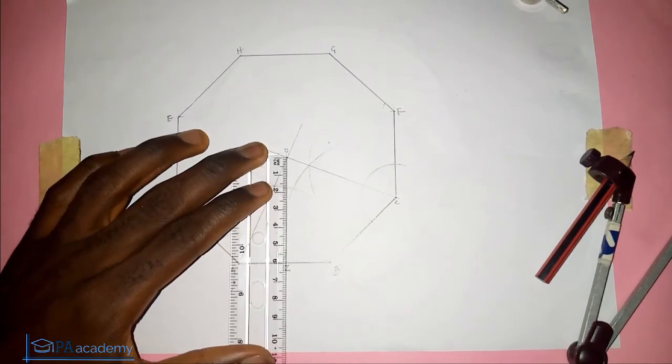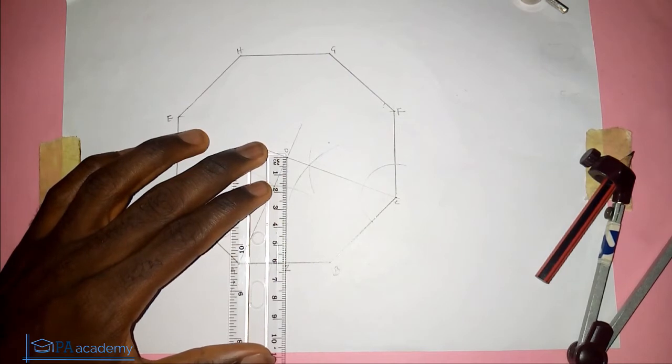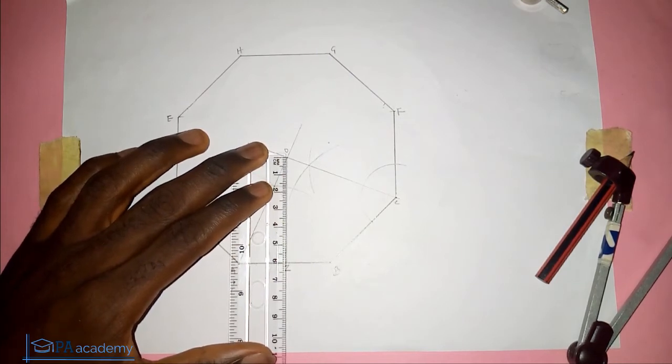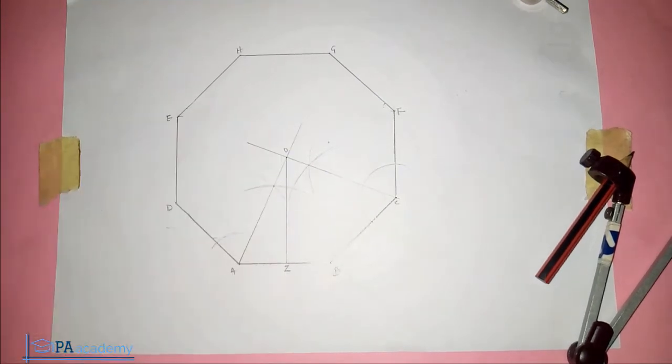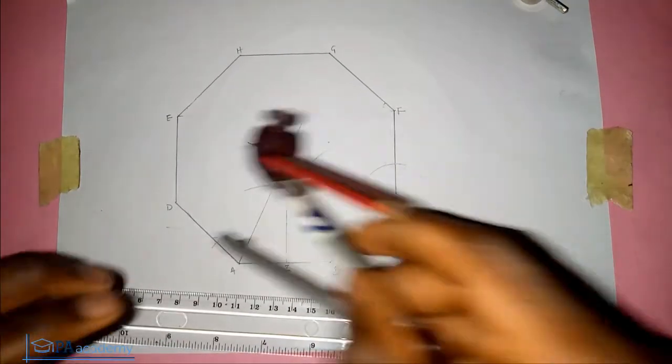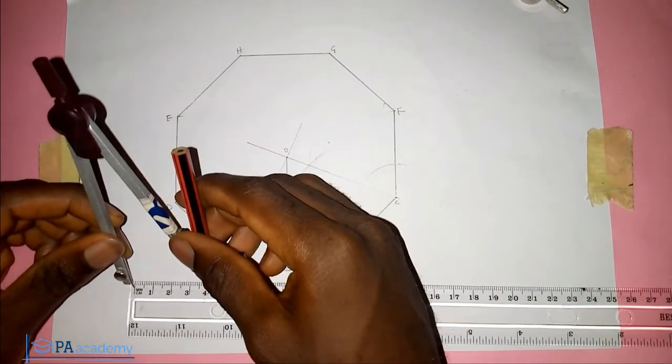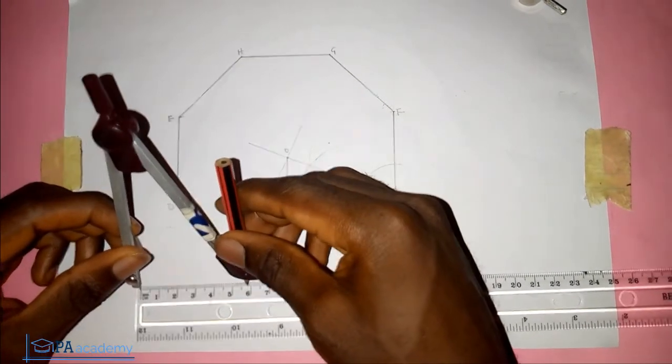Now let's measure the length OZ. That's also the radius of the circle that we're going to be inscribing inside. This is giving us six centimeters, that's 60 millimeters. Pick our compass and let's measure six centimeters, that's also 60 millimeters.